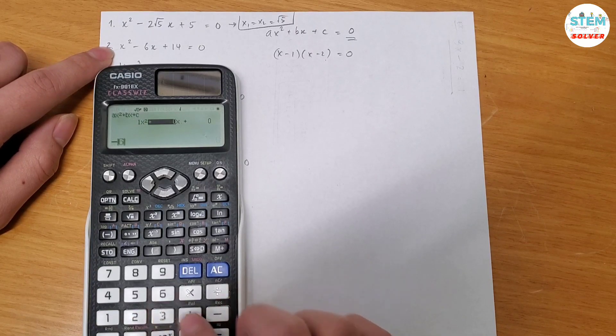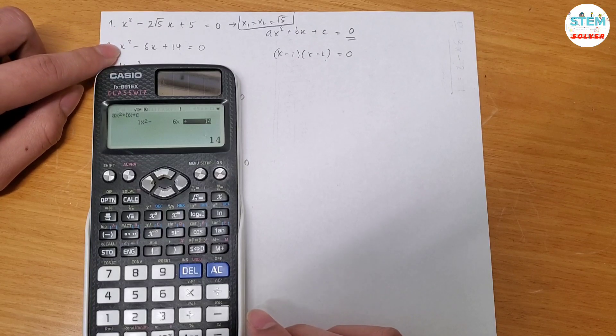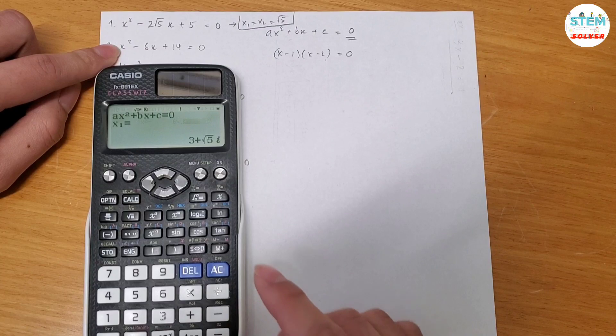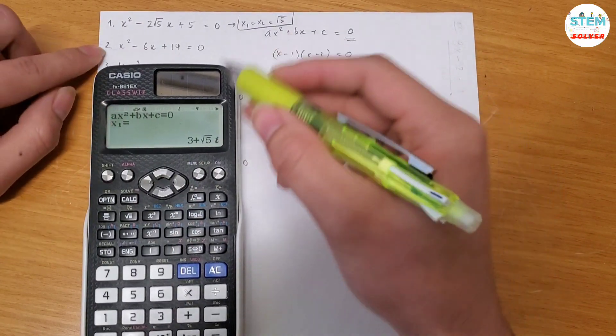now 1, -6, 14. Make sure you have the equation in this form, ax² + bx + c = 0. Okay, in this case you have an imaginary root, so it says x1 equals this.